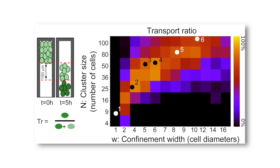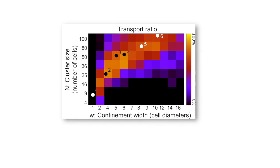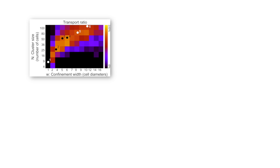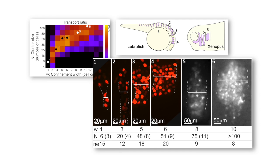And we found that there is a very good correlation between what the model predicts as an optimal and the real numbers that are found in the real world. So this really suggests that during evolution, the number of cells is selected for a specific width of the stream.